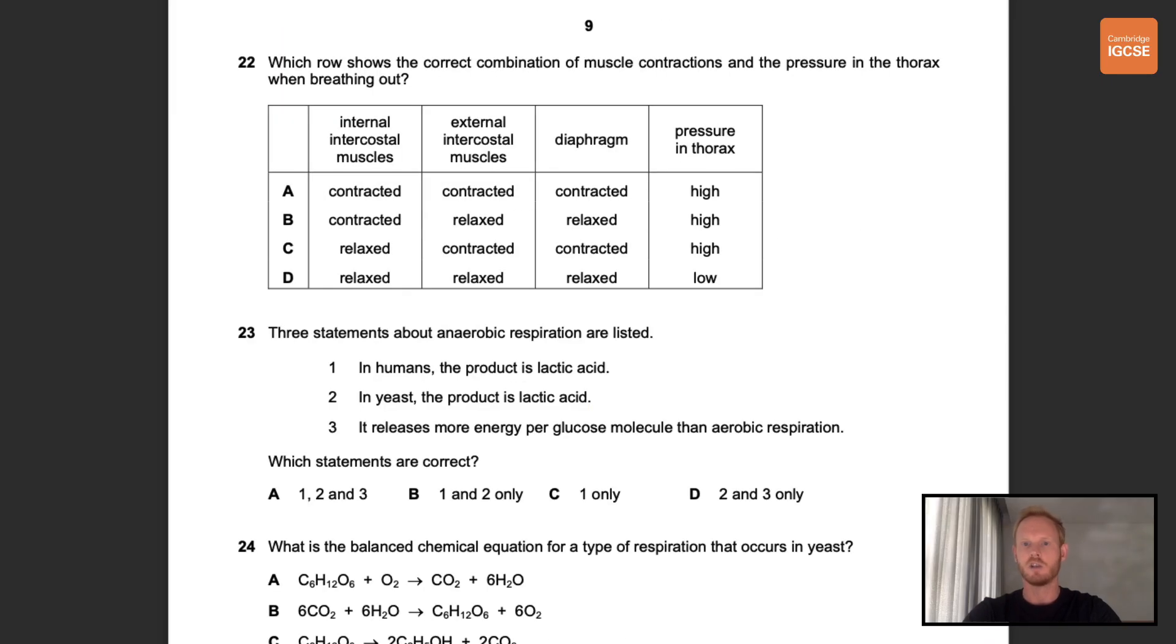Number 22. Which row shows the correct combination of muscle contractions and the pressure in the thorax when breathing out? So when breathing out, the external intercostal muscles relax and the internal intercostal muscles contract. This pulls the ribcage downwards and inwards, and at the same time the diaphragm relaxes and domes upwards. These actions serve to increase thoracic pressure, causing air to rush out of the lungs. The correct answer is therefore B.